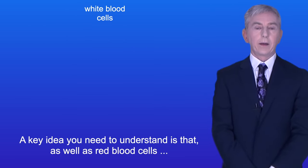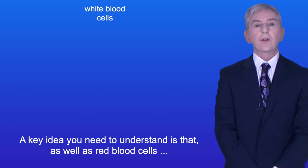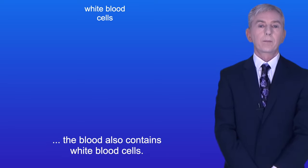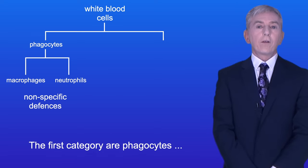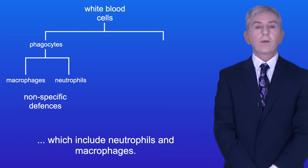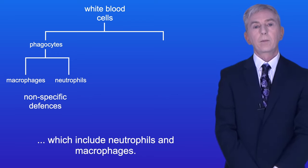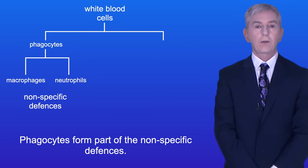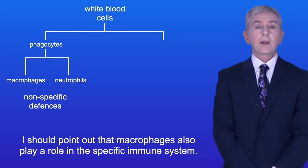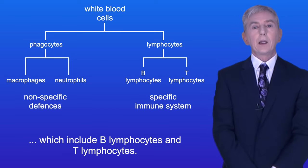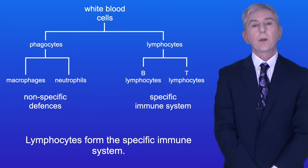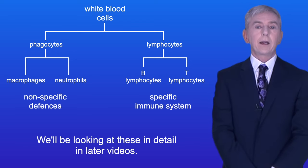A key idea you need to understand is that as well as red blood cells the blood also contains white blood cells. We can divide white blood cells into two categories. The first category are phagocytes which include neutrophils and macrophages. Phagocytes form part of the non-specific defenses, although macrophages also play a role in the specific immune system. The second category are lymphocytes which include B lymphocytes and T lymphocytes. Lymphocytes form the specific immune system and we'll be looking at these in detail in later videos.